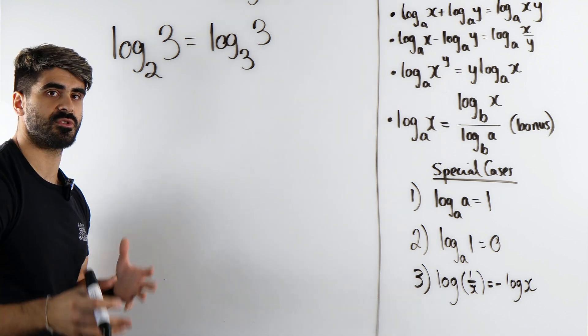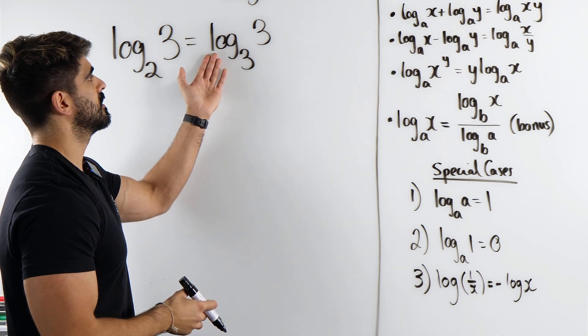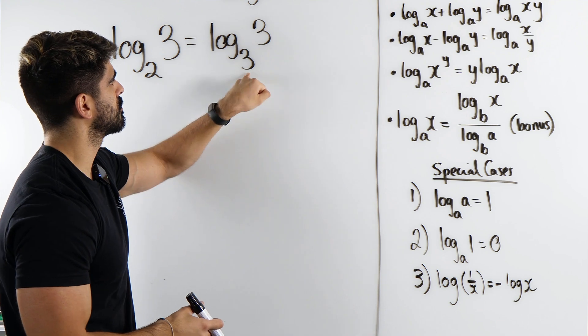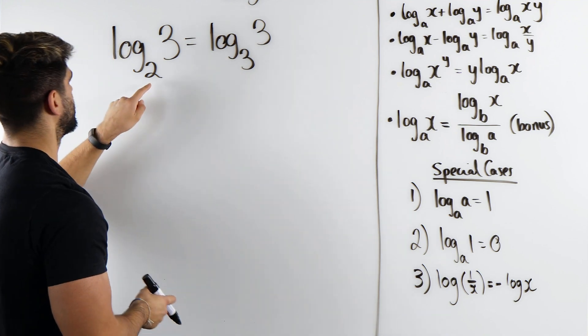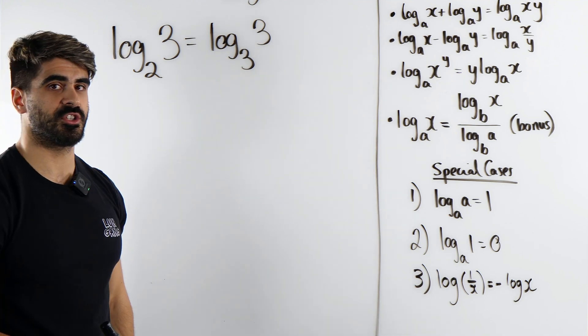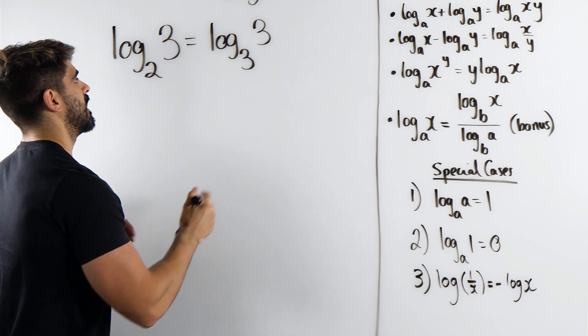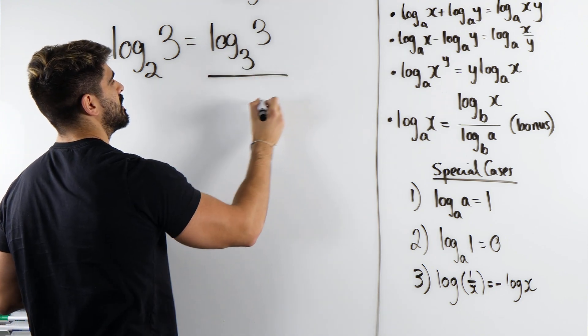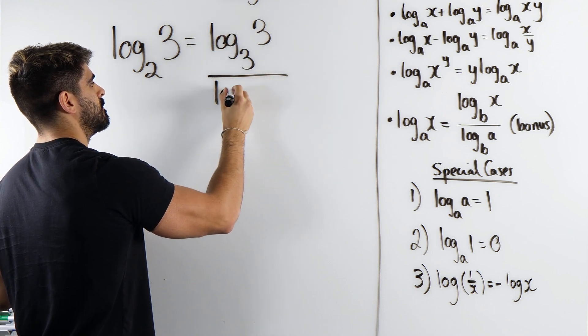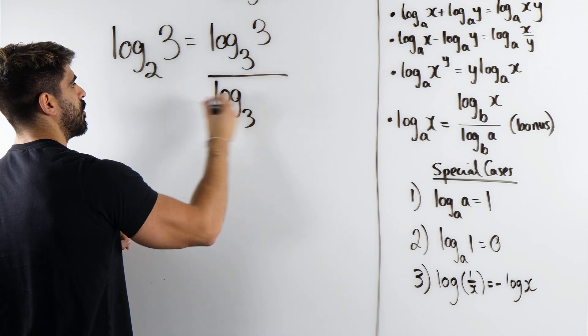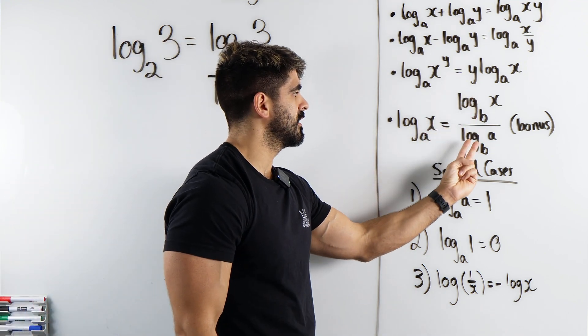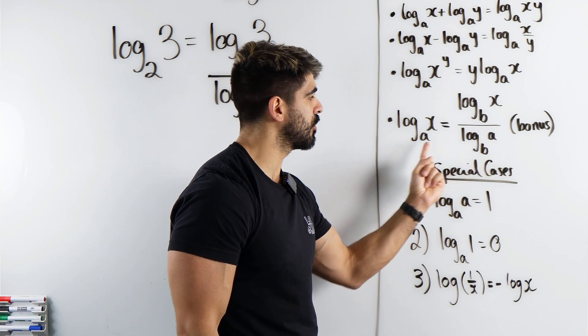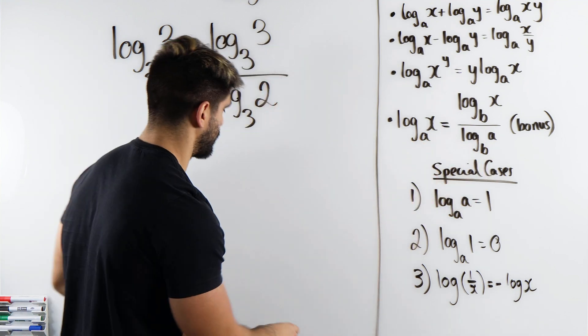Because remind ourselves, what does a log even mean? Log tells us, or asks us, 3 to the power of what is 3? The answer is 1. This is saying 2 to the power of what is 3, which is why I want to change it to this. But in order to change that, you then have to divide by the same log base 3 of the old base. So here, you divide by log base B of the old base. Let's prove it.